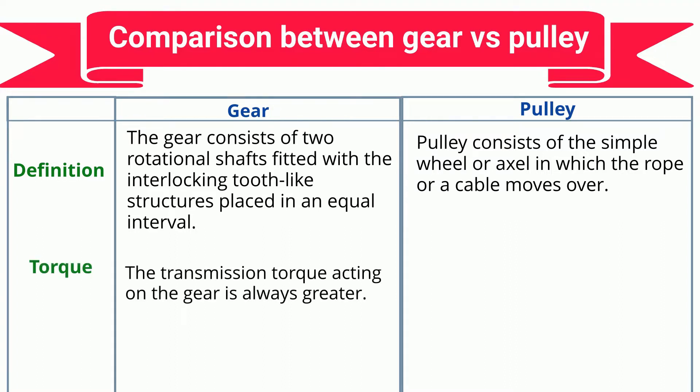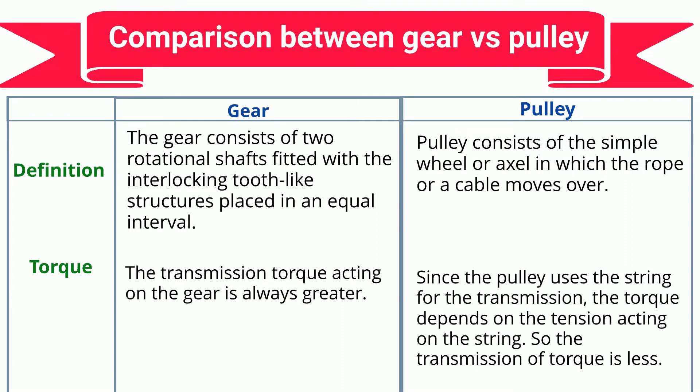Torque: The transmission torque acting on the gear is always greater. Since the pulley uses a string for transmission, the torque depends on the tension acting on the string, so the transmission of torque is less.